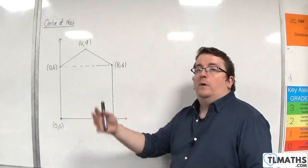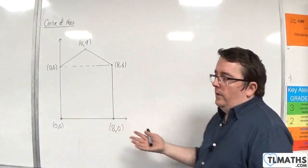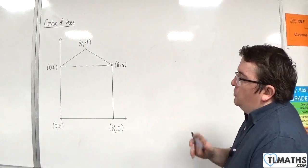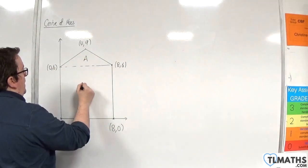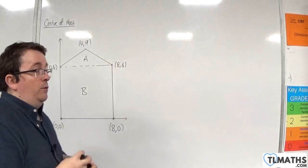However, I'm going to run through it doing both the x's and y's. So, I'm going to split this up into two shapes. We've got the triangle at the top, so that's going to be shape A, and we're going to have the rectangle shape B.